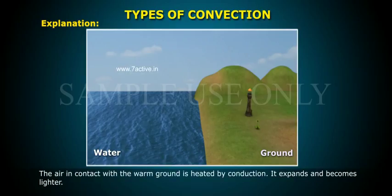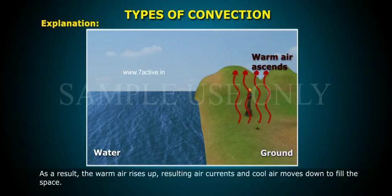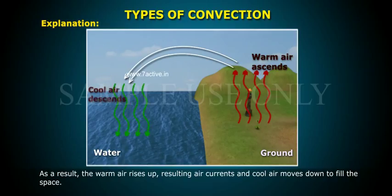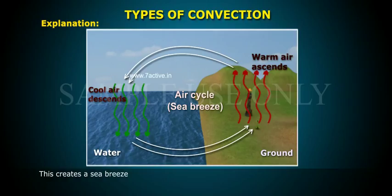The air in contact with the warm ground is heated by conduction. It expands and becomes lighter. As a result, the warm air rises up, resulting in air currents, and cool air moves down to fill the space. This creates a sea breeze.